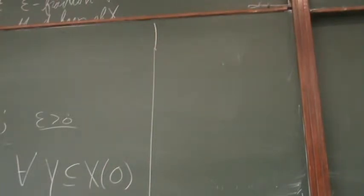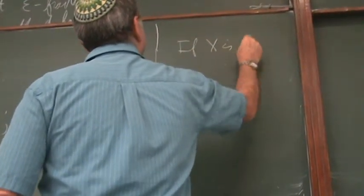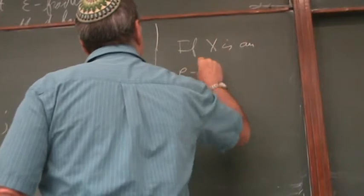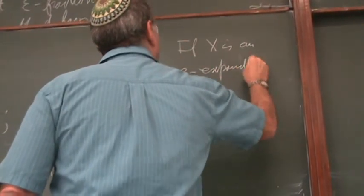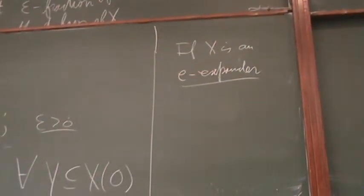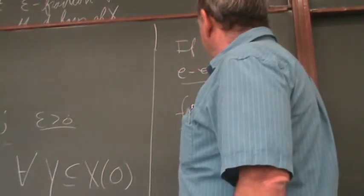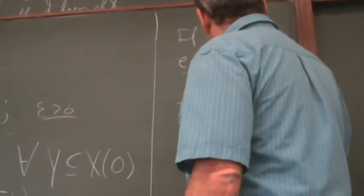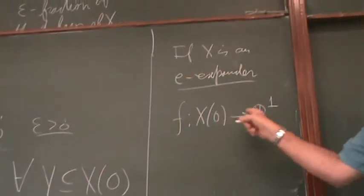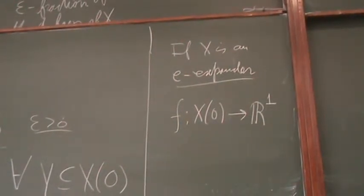When we say a graph is an expander, we really have to think about a family of infinitely many graphs which are epsilon expanders with the same epsilon, where the size goes to infinity. If X is an epsilon expander, I want to show it has the topological overlapping property. We take F, an arbitrary map from the vertices to the real line.